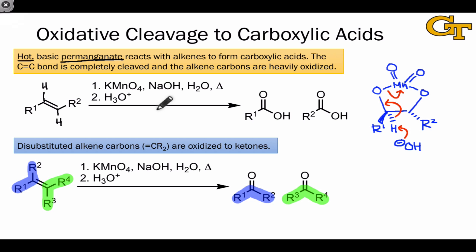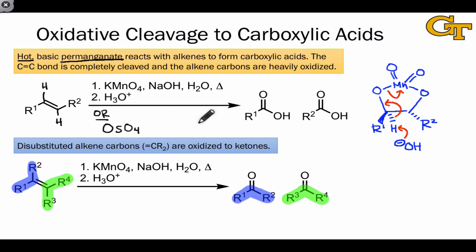One final point to mention about this reaction is that a different set of reaction conditions can accomplish the same transformation using fewer reagents. Osmium tetroxide, or OsO4, is analogous to potassium permanganate in that it contains osmium in a very high oxidation state, here plus 8. Osmium tetroxide is capable of this kind of oxidative cleavage, but osmium is a very toxic and unfriendly reagent. So typically, it's only used in a catalytic amount with a co-oxidant present in stoichiometric amount.